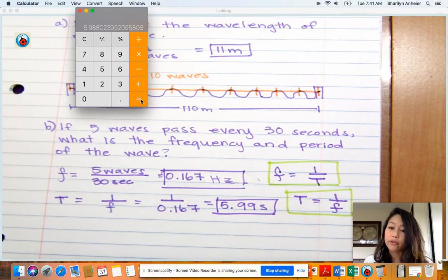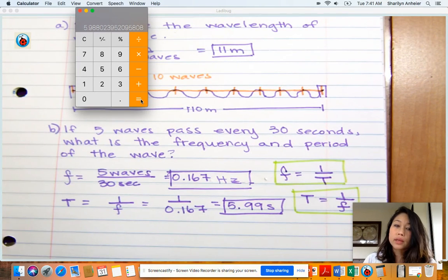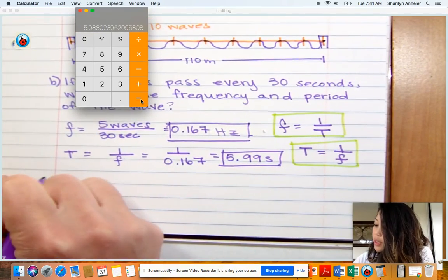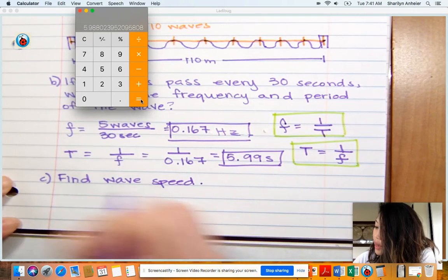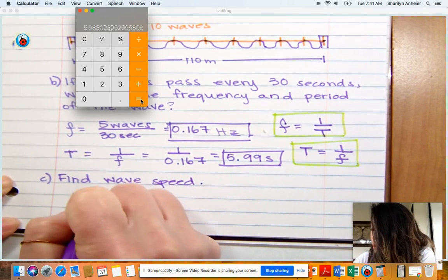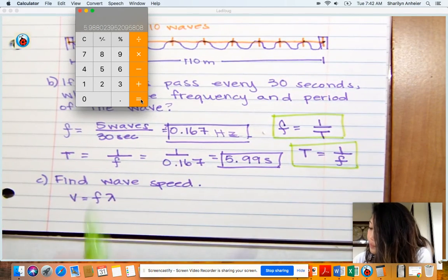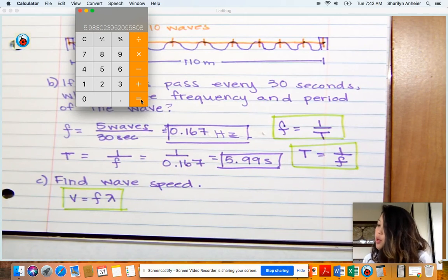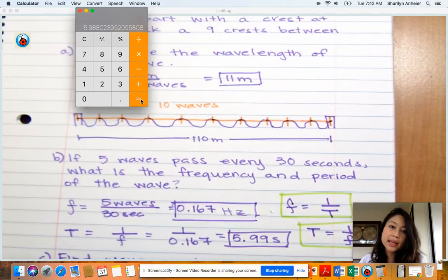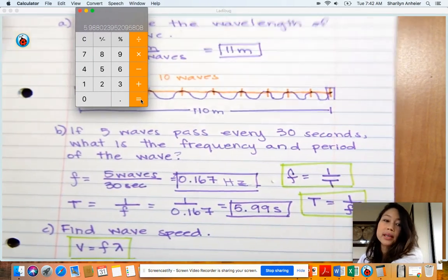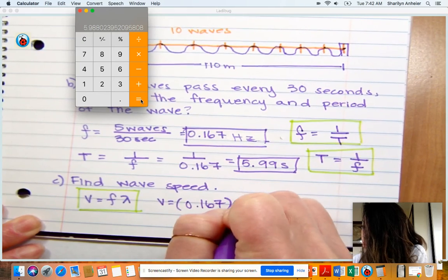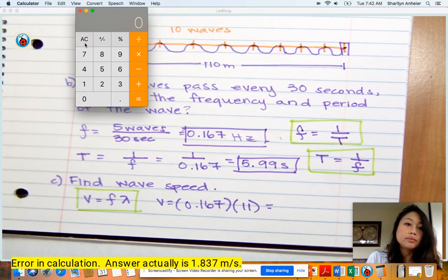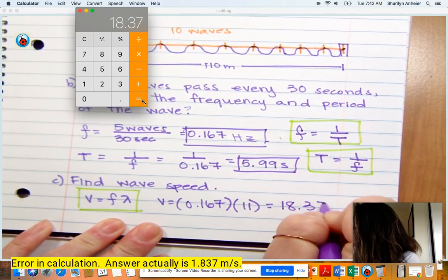The last problem was to find the wave speed. That equation is velocity equals frequency times wavelength. Because we already figured out our wavelength and our frequency, we're just going to multiply these two values. I've got my 11 meters for wavelength, 1.67 for my frequency. I take those two values, multiply them together, and get 18.37 meters per second.